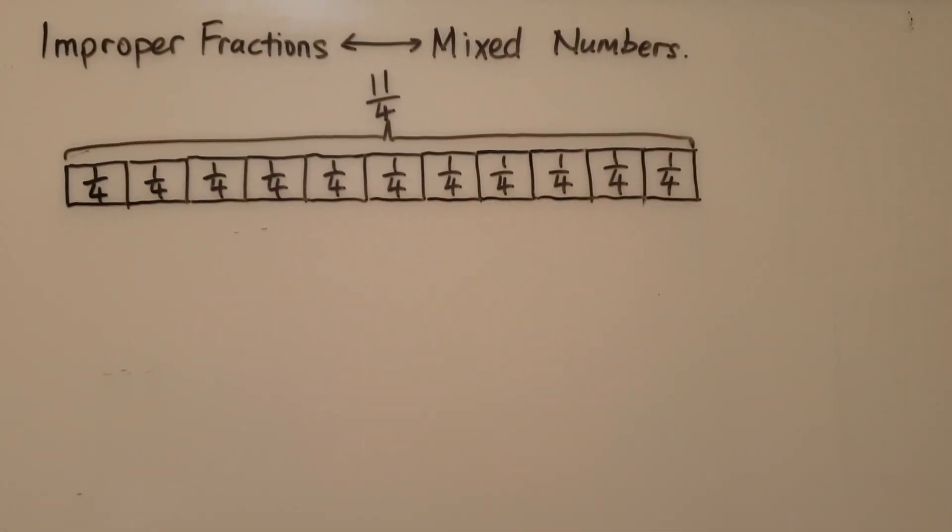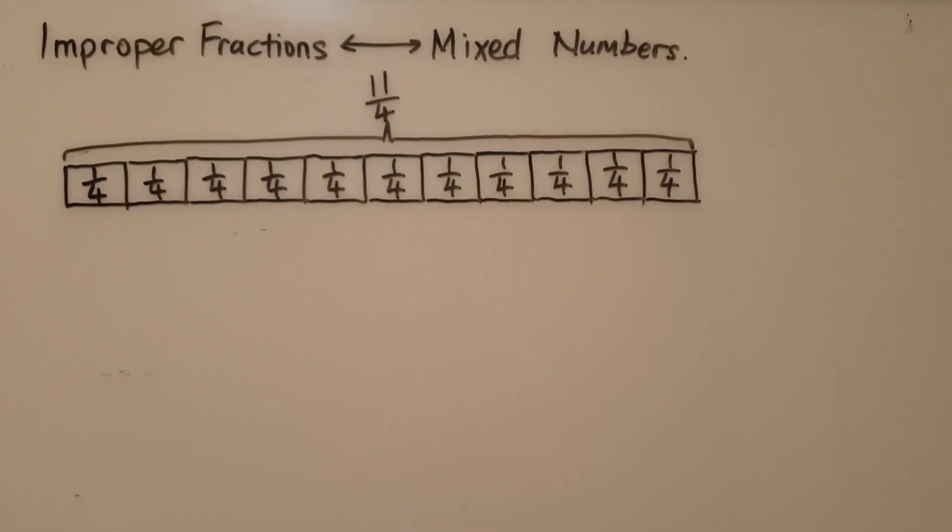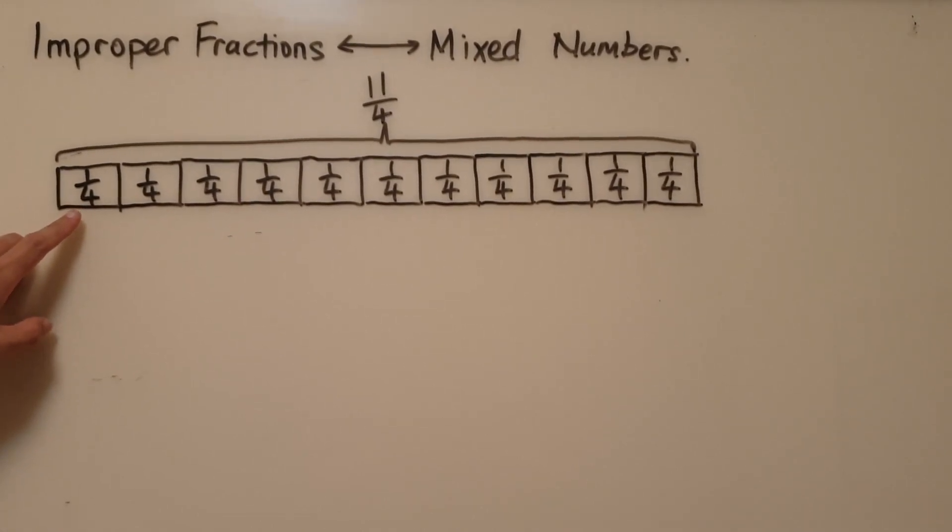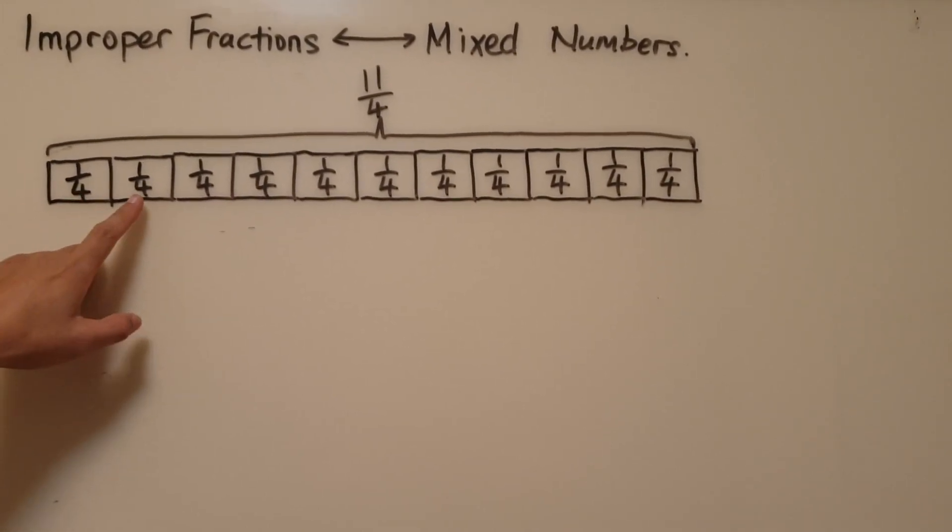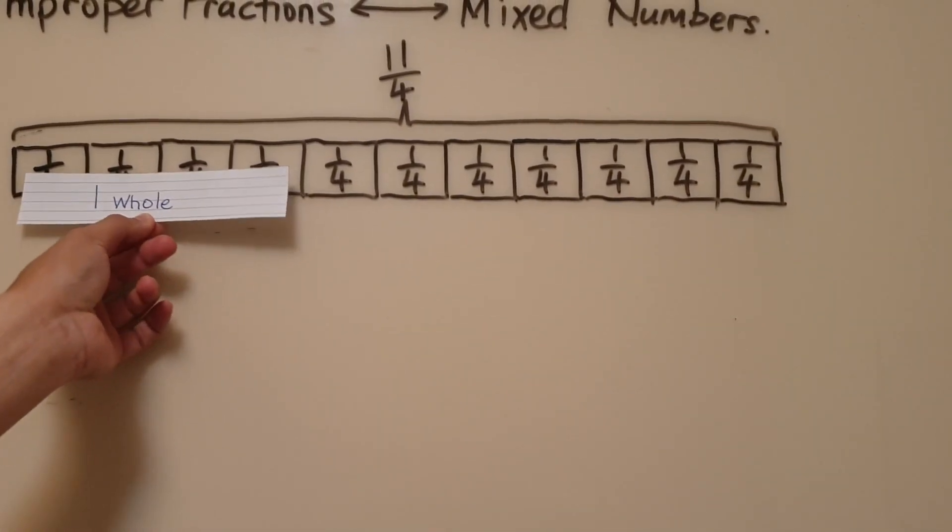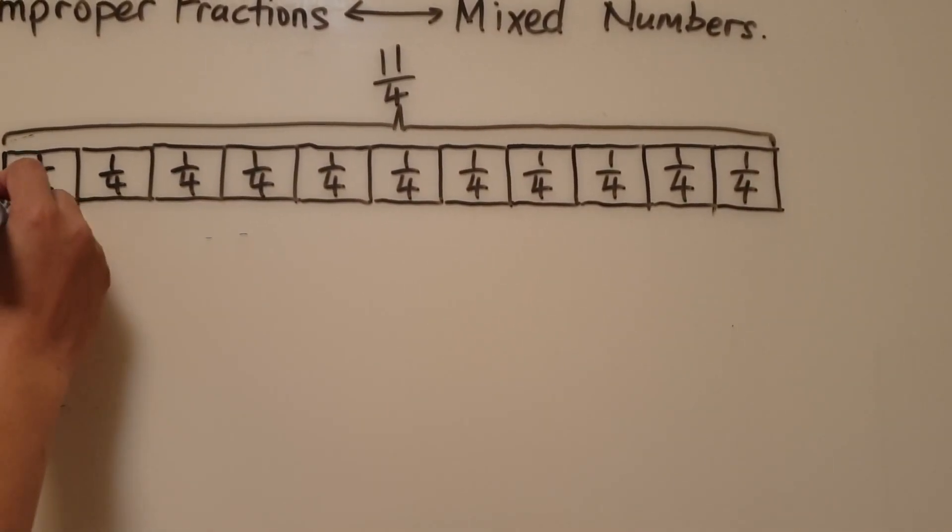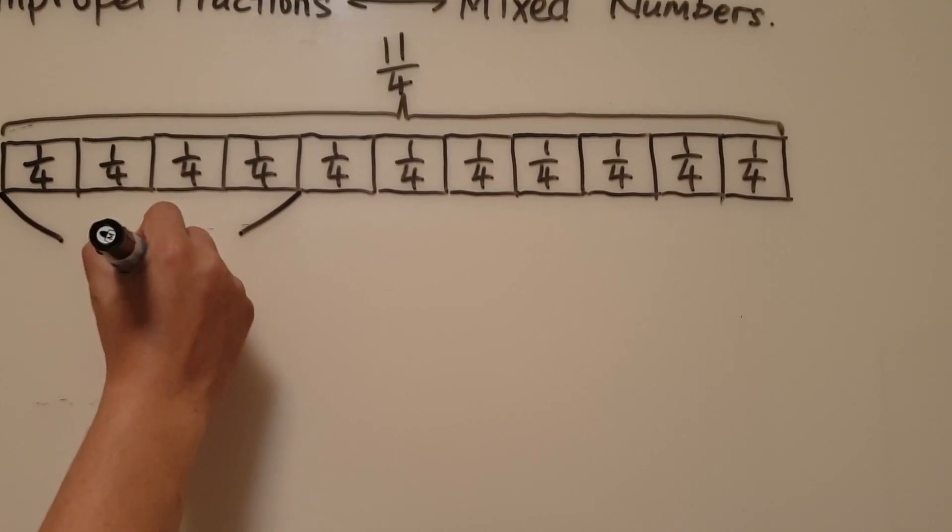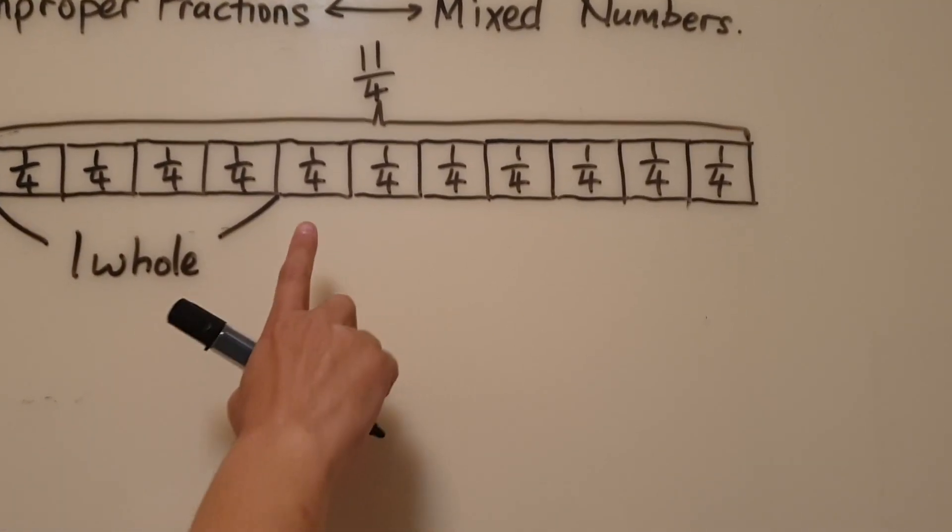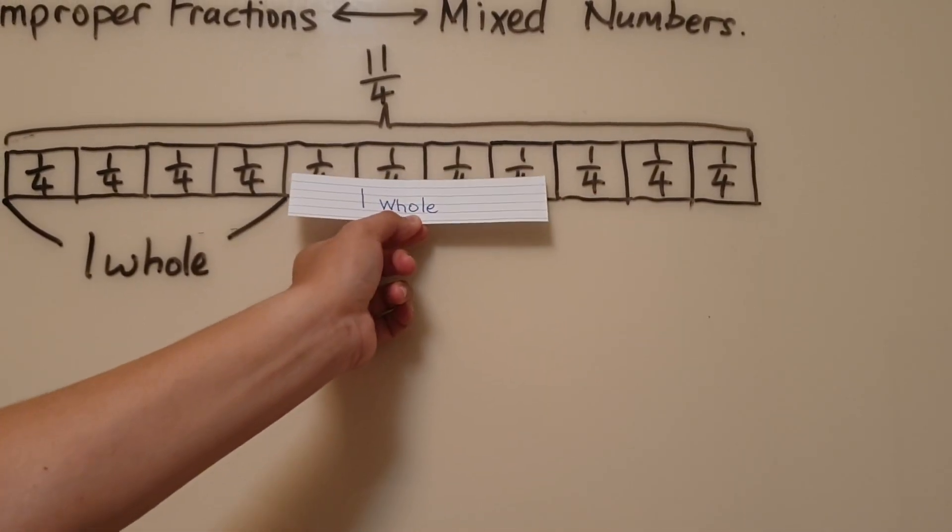So how do we get this into mixed numbers? Again, we start by regrouping according to the denominator which is 4. So this tells me I need 4 parts: 1, 2, 3, 4 to make a whole. So 4 quarters give me a whole. I can continue regrouping quarters: 1, 2, 3, 4 to get another whole.